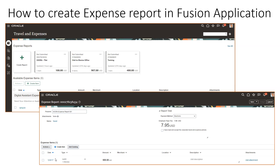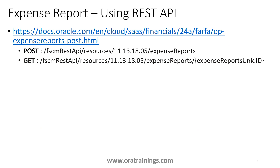Then you add up the lines by clicking 'Create Item.' You mention the lines — type, amount, and merchant. If it is based on your credit card, you can mention the description, add attachments, add a location, and if you want to divide the amount among multiple persons, you have a couple of options for that. This is how we can create an expense report using the Fusion application.